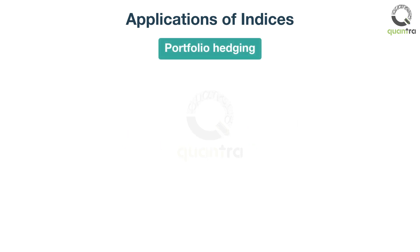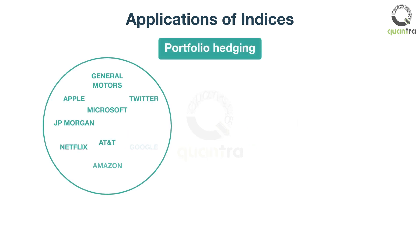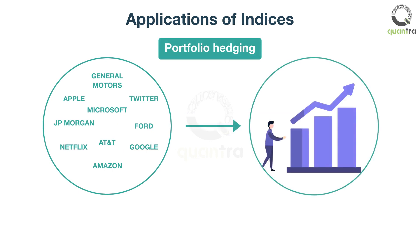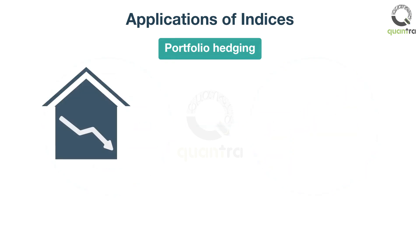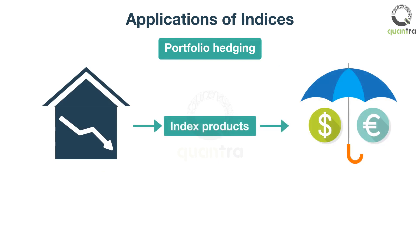For portfolio hedging, investors usually build a portfolio of 10 to 12 securities, which they hold for the long term to enjoy capital gains. In times of adverse situations such as a housing market crash, which could erode capital in the portfolio, investors can use index products to hedge the portfolio.